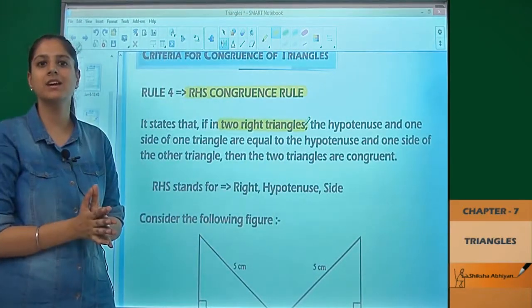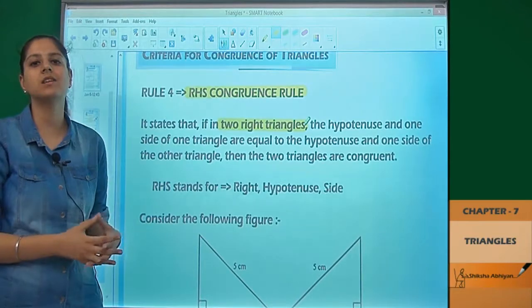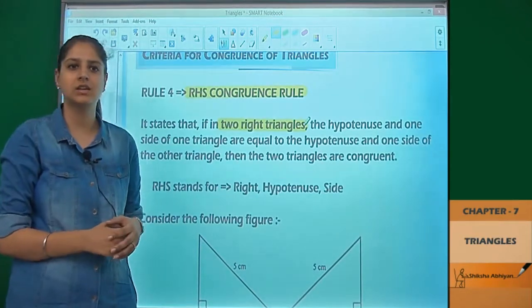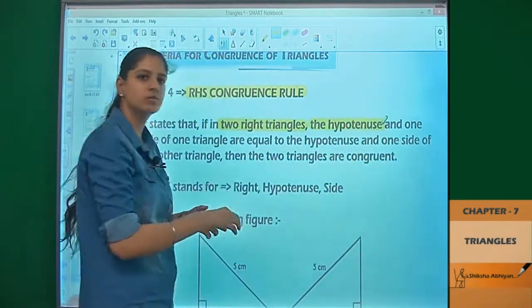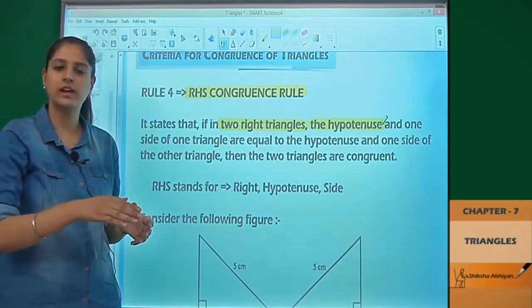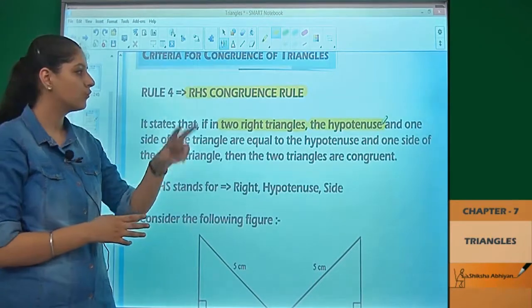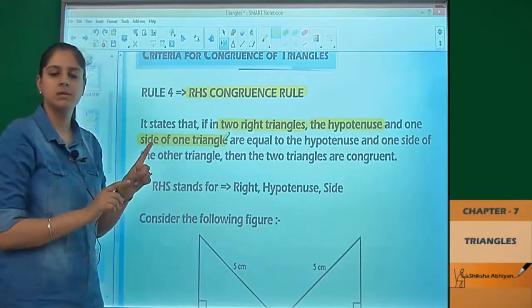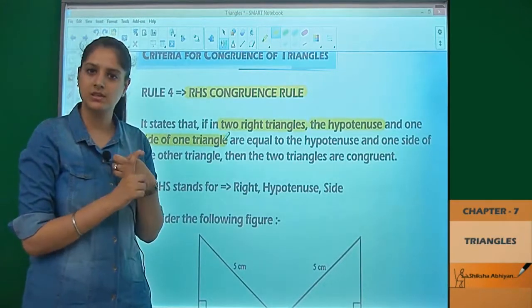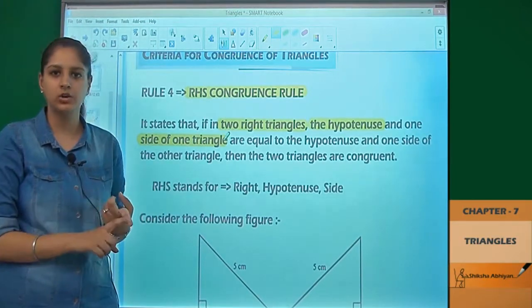Right triangles. If two triangles are given and they are right triangles, meaning one angle is 90 degrees in both, then the hypotenuse - the slanting side that doesn't include the 90-degree angle - and one side of the triangle... The first criteria is that both triangles must be right triangles, meaning they must have one 90-degree angle.